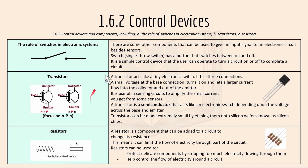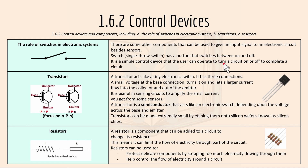Now we have 1.6.2 controlled devices and here's the role of switches in an electronic system. There are some other components that can be used to give an input signal to an electronic circuit besides sensors. A switch, like a single throw switch, has a button that switches between on and off. It is a simple control device that the user can operate to turn a circuit on or off and complete a circuit.